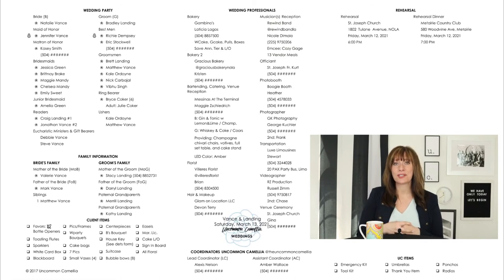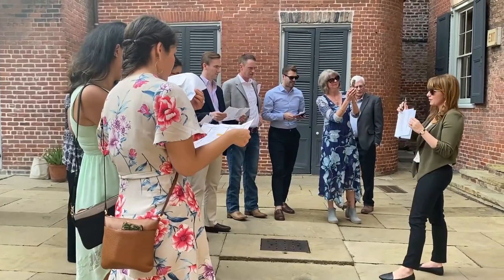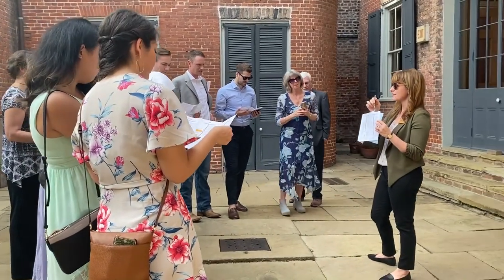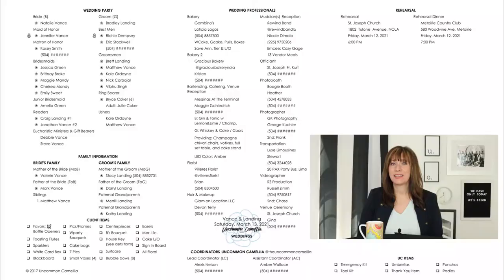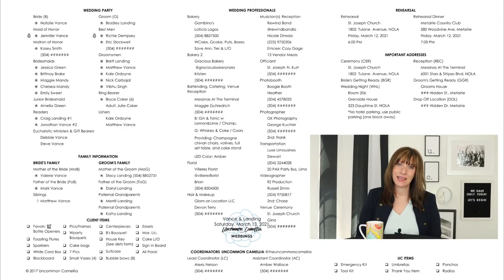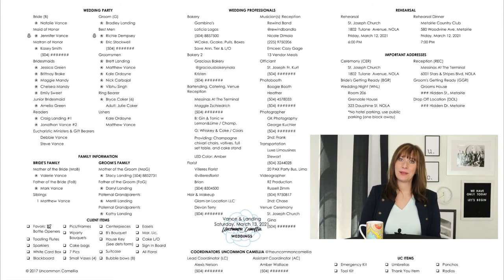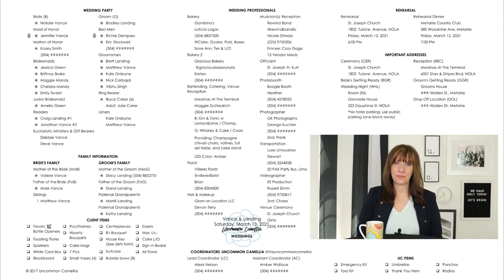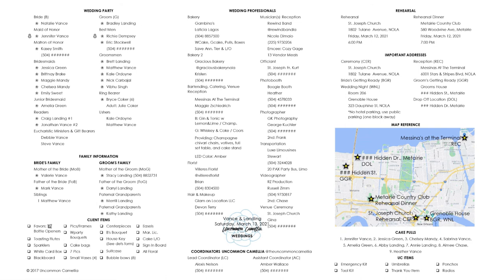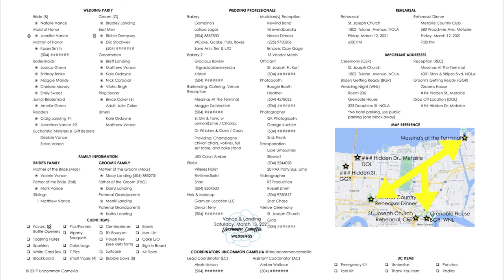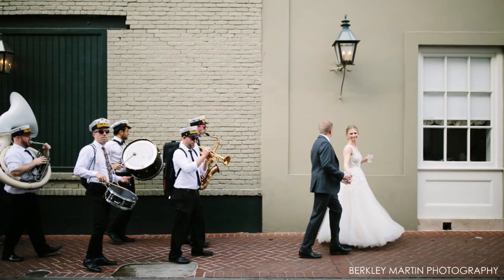On the third and final section we start with the rehearsal dinner info. We usually give this document to the wedding party at the rehearsal, so having some details on the dinner is helpful. Next are the important addresses: the couple's getting ready locations, ceremony, reception, after party, hotel blocks, and the drop-off location are all listed there. Below that is a map reference which just gives a quick look at the proximity of all the wedding addresses. When the wedding includes a second line, we'll also include a route here.